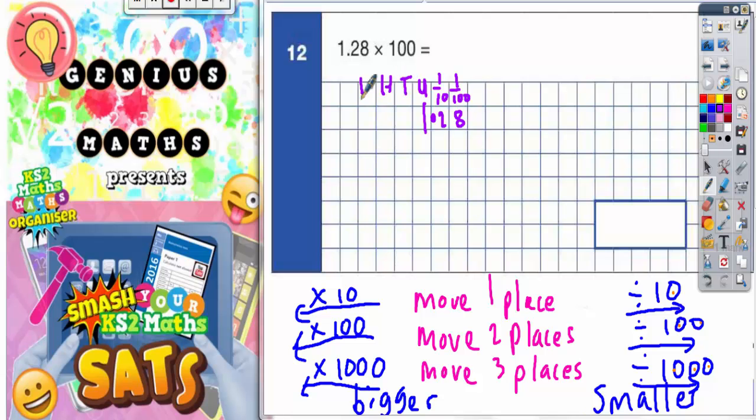Because we're multiplying by 100, that's this one here, we've got to move each digit two places forward. So the one is going to go two places forward into this column.